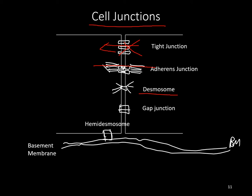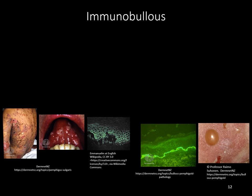Desmosomes provide structural support via intermediate filaments. Importantly, autoantibodies to desmosome proteins desmoglein 1 and desmoglein 3 are implicated in pemphigus vulgaris. Gap junctions have connexons that permit electrical and chemical communication between adjacent cells. The hemidesmosome contains proteins that connect keratin in the basal layer of the epidermis to the underlying basement membrane, and autoantibodies to hemidesmosome proteins are seen in bullous pemphigoid.